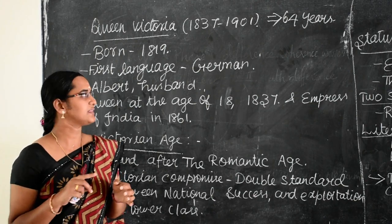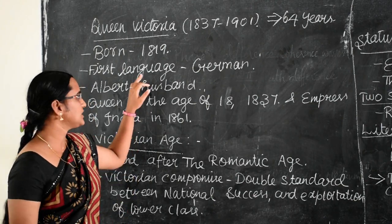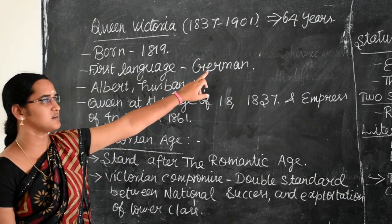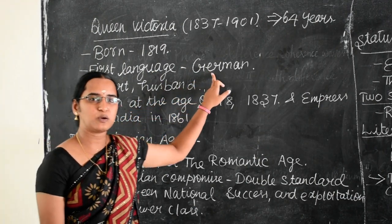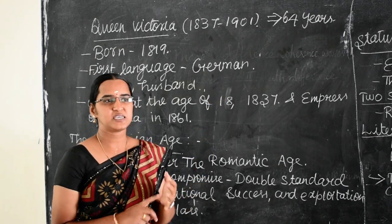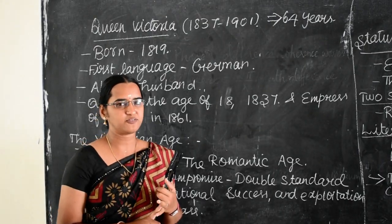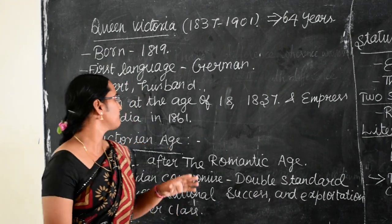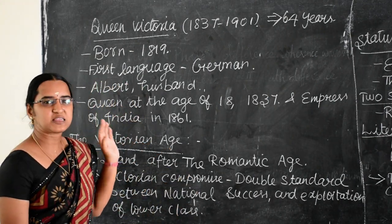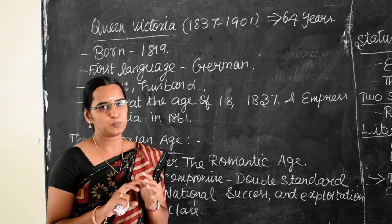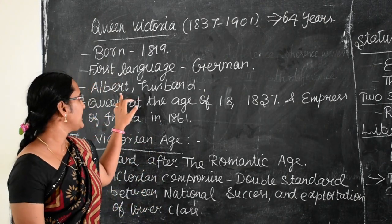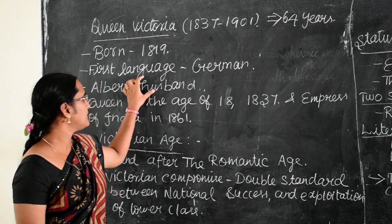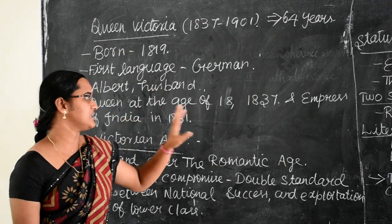Her father died when she was eight months old. Though she belonged to England, her first family is German. She was not allowed to be educated in schools. She studied history, geography, and the Bible, which is the holy book of the Christians. She was taught to play piano and to paint. She married Albert, a German prince.